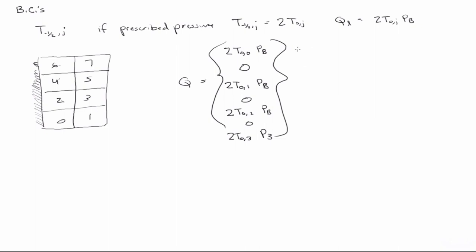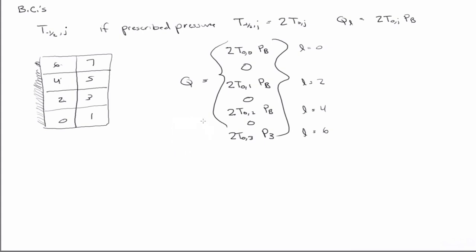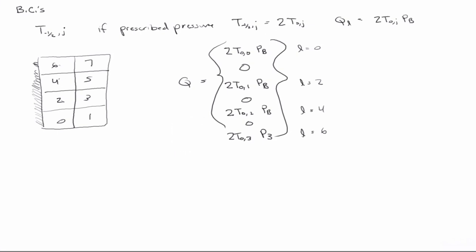So these correspond to the l equals 0, l equals 2, l equals 4, and l equals 6 grid block numbers. Those correspond to those grid block numbers where there's a constant pressure boundary condition.